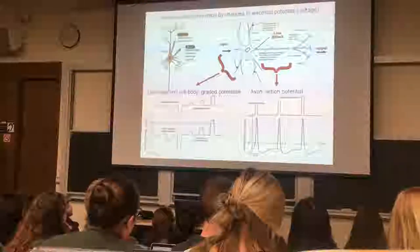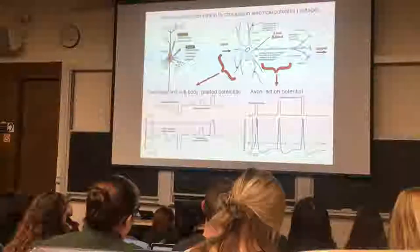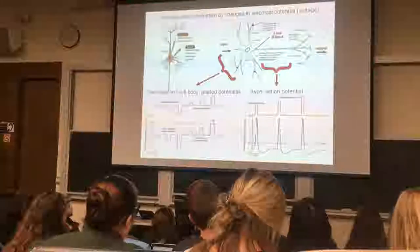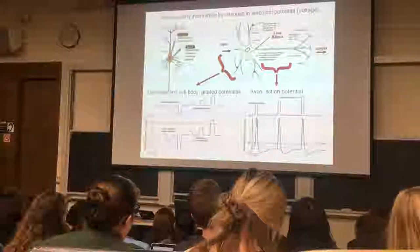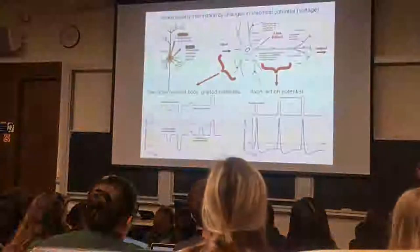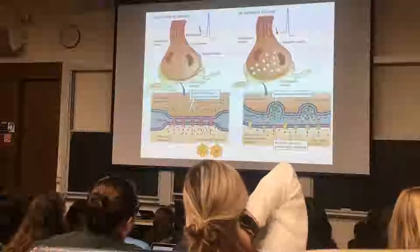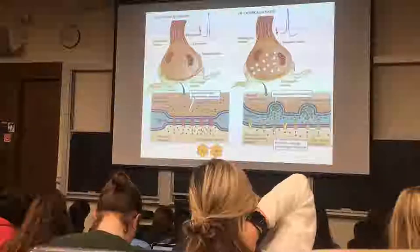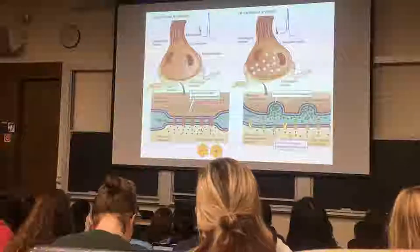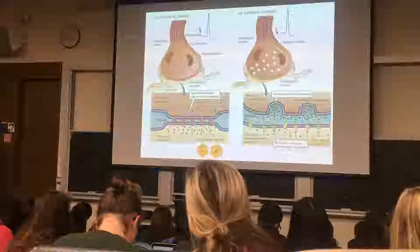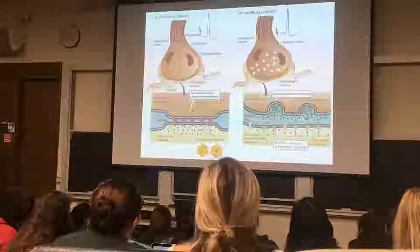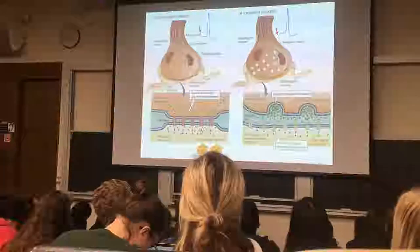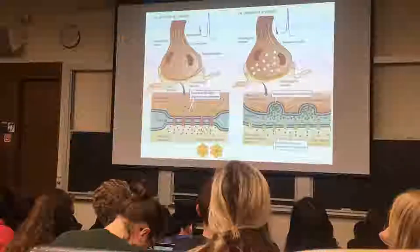These are graded potentials; these are action potentials. It's the action potentials that are involved in nerve-to-nerve communication. At the far end of the axon is the presynaptic nerve terminal. Here's an axon — it may branch, but we'll only consider one branch. This is the presynaptic nerve terminal. Here's the action potential whizzing down the axon and arriving at the presynaptic nerve terminal.